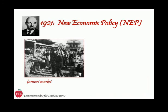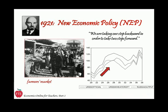Lenin noted that 'we're taking one step backward in order to take two steps forward.' And the bottom line is that the policy worked. Agricultural production quickly increased, and by 1928 it had recovered to pre-war levels.